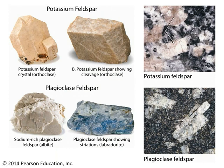The feldspars are the most common minerals in the Earth's crust. Together, potassium feldspar and plagioclase feldspar make up about half the volume of the crust — a tremendous volume. They come in many different varieties: some are richer in potassium, some in calcium, some in sodium. These minerals are very, very common in Earth's crust.